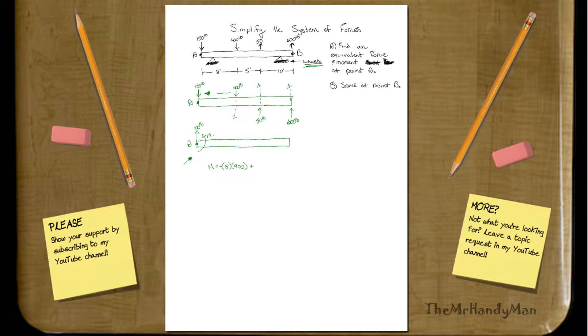So let's continue. We know this one's going to be positive because 50 goes the opposite direction. So now we know 8 plus 5, which will be 13, times 50 pounds. Keep going. Now you have 23 times 600 pounds.